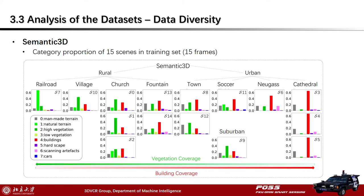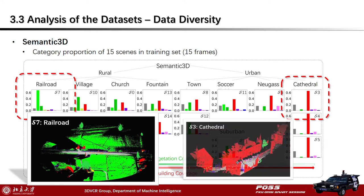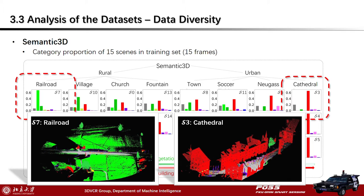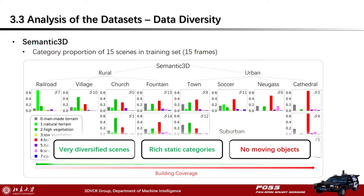The first dataset is Semantic3D, which contains 15 scenes in the training set divided into three groups — urban, rural, and suburban — according to geographic location. Regardless of whether scenes are in the same or different groups, the category proportions of scene objects are very diversified. For example, scene 7 is a railroad scene full of natural terrain with almost no buildings, while scenes 3–5 are cathedral scenes with buildings but almost no vegetation. In general, Semantic3D describes very diversified scenes with rich static categories and dense point clouds. However, it has no moving objects, which limits its usage for applications like autonomous driving.